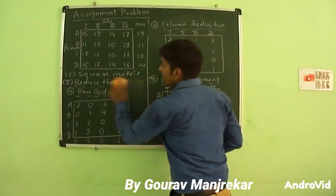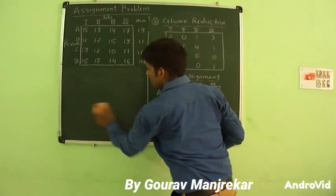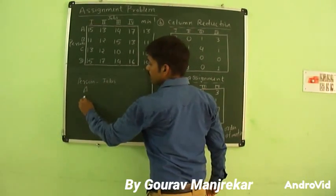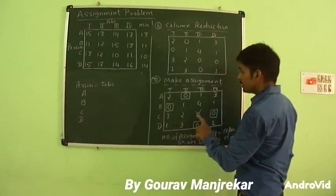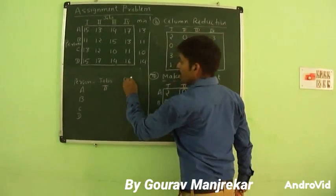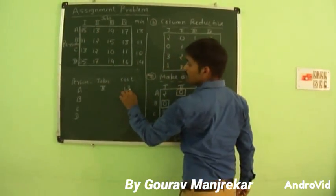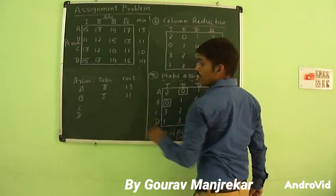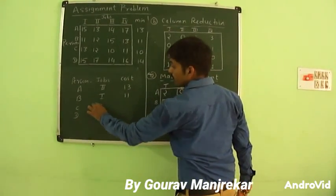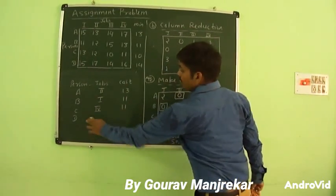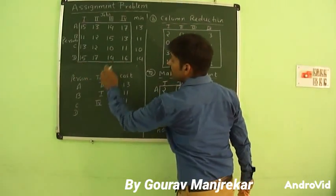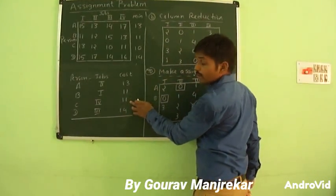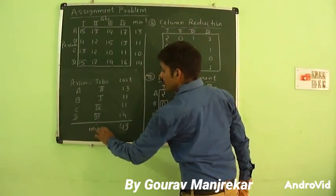We now write the optimum (minimum) cost. We have four persons A, B, C and D. Person A is assigned to job 2, cost = 13. Person B is assigned to job 1, cost = 11. Person C is assigned to job 4, cost = 11. Person D is assigned to job 3, cost = 14. The total minimum cost is 13 + 11 + 11 + 14 = 49.